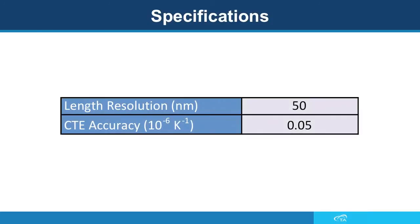Like all TA instrument dilatometers, the DIL806 is extremely sensitive, accurate, and precise, with length resolution as low as 50 nanometers and CTE accuracy well below one part per million per degree.